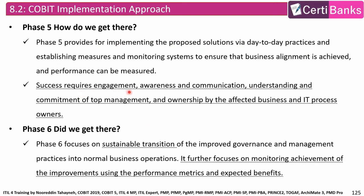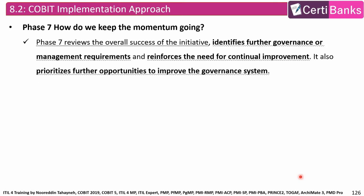Success always requires engagement, awareness and communication, understanding and commitment of top management, and ownership by the affected business and IT process owners. Phase six — did we get there? — focuses on sustainability and transition of the improved governance and management practices into normal business operations. It further focuses on monitoring achievement of the improvement using performance metrics and expected benefits. Phase seven — how do we keep the momentum going? — reviews the overall success of the initiative, identifies further governance or management requirements, reinforces the need for continual improvement, and prioritizes further opportunities to improve the governance system.